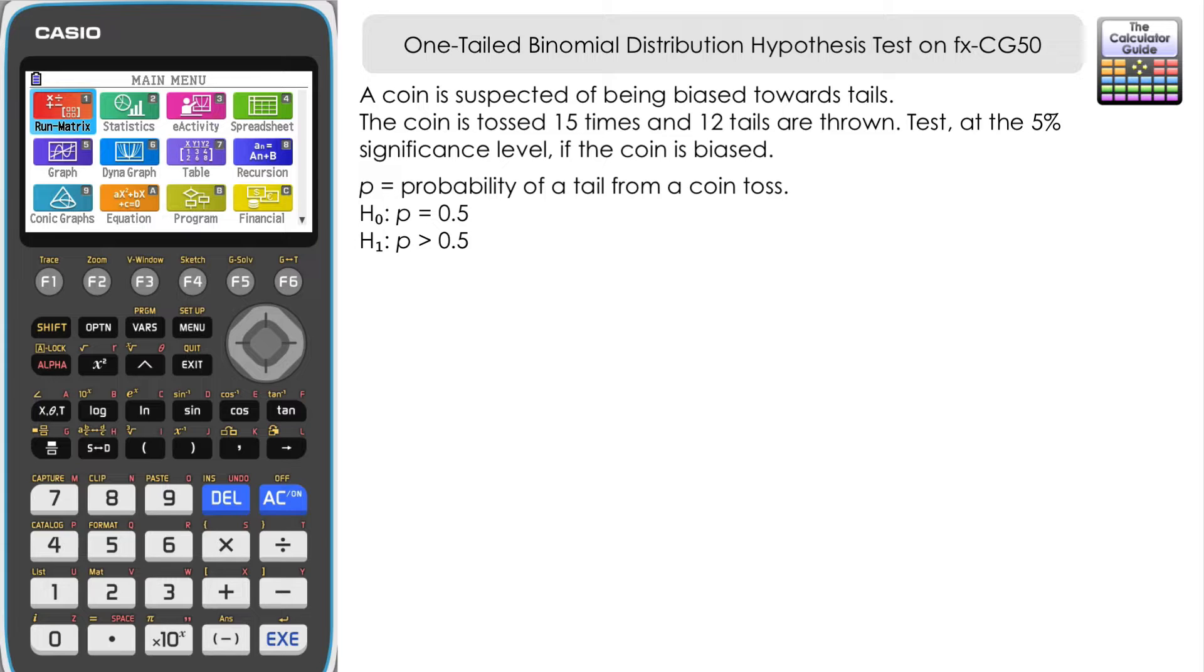Our null hypothesis H0 is that P equals 0.5. Where does this come from? This comes from imagining that the coin is fair. You've got two different choices: heads or tails, each with a 0.5 probability. So we're initially assuming the coin is fair and not biased, therefore the probability of getting a tail will be 0.5.